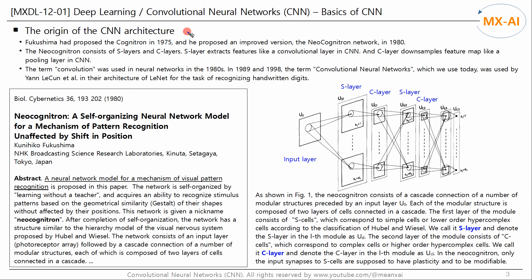Let's take a brief look at the history of CNN. Fukushima proposed the Cognitron in 1975, and then proposed an improved version, the Neocognitron Network, in 1980. The Neocognitron consists of S-layers and C-layers. The S-layer extracts features from data, like the convolutional layer of a CNN, and the C-layer downsamples the feature maps, like a pooling layer in CNN.